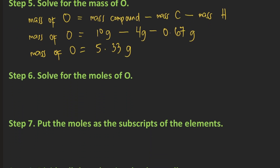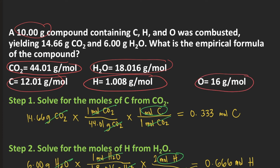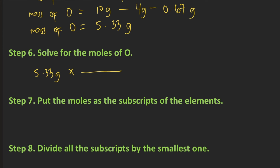Step six: solve for the moles of oxygen. From step five we have 5.33 grams of oxygen. The molar mass of oxygen given in the problem is 16 grams per mole, so 16 grams of oxygen is equivalent to one mole of oxygen. The grams of oxygen cancel, and you get approximately 0.333 moles of oxygen.